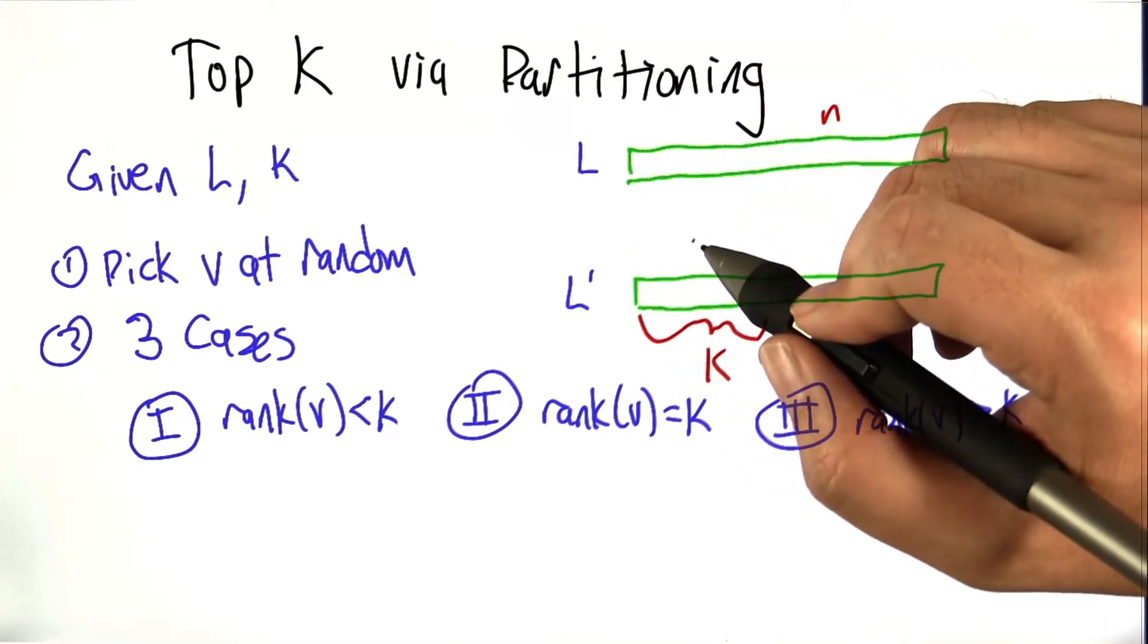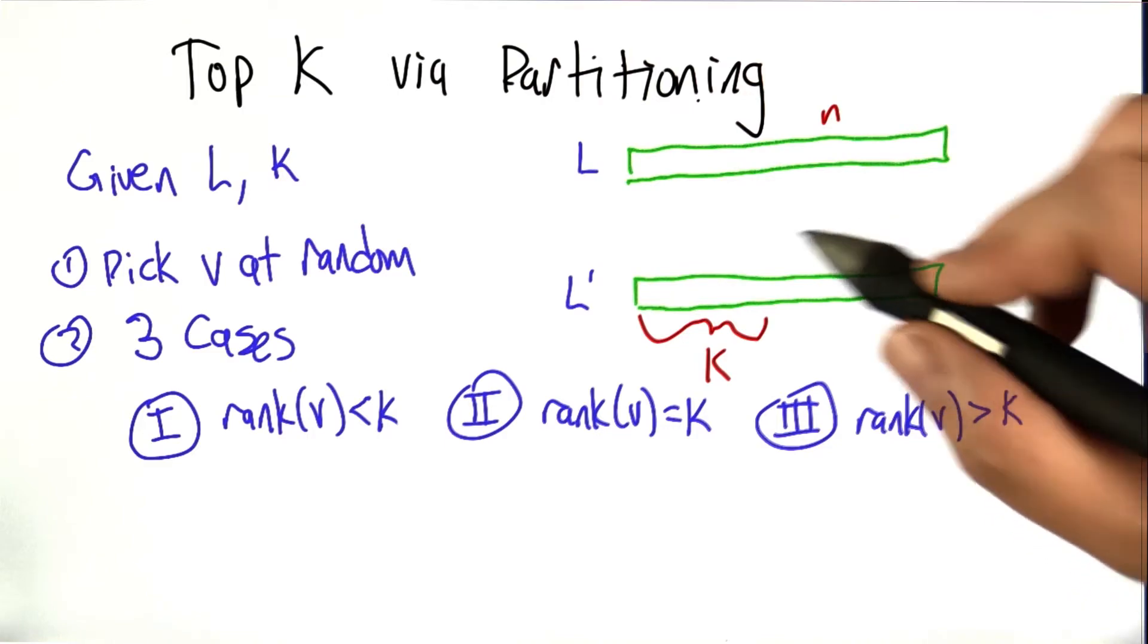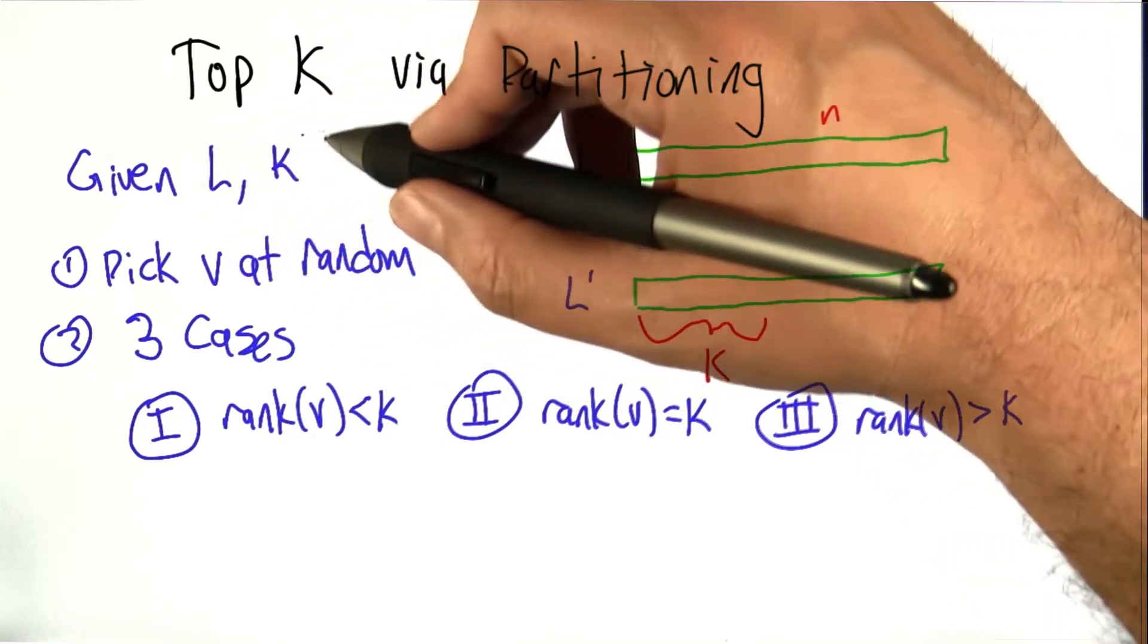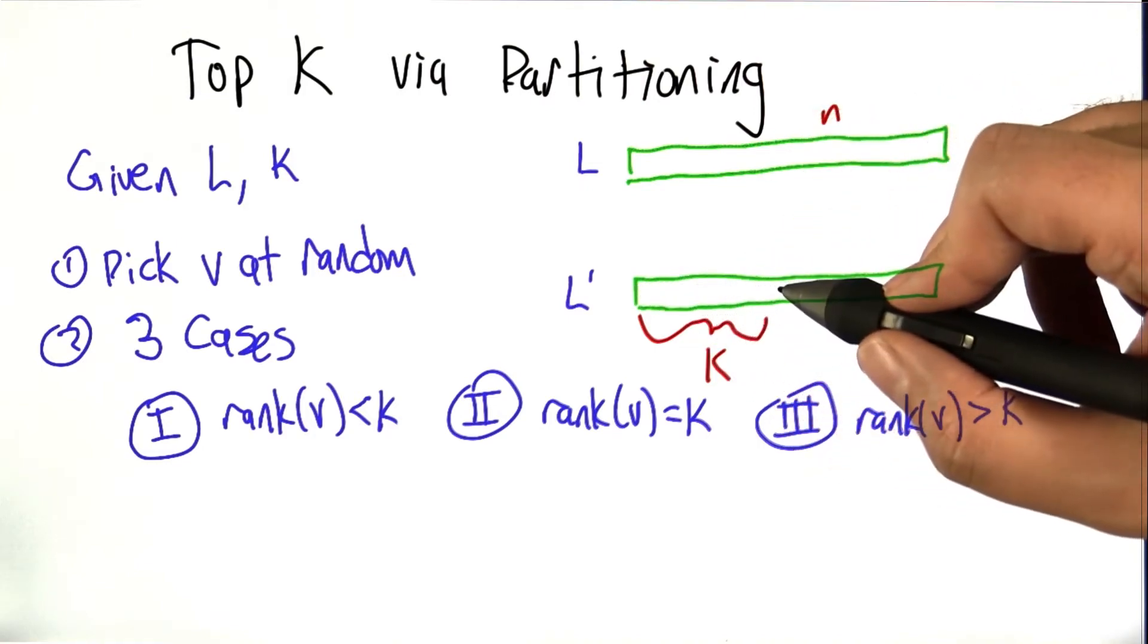So let's go over now how we can actually solve the top k problem using this idea of partitioning. Now remember, what we're given here is a list L and some number k, and what we're interested in are the top k elements of L.